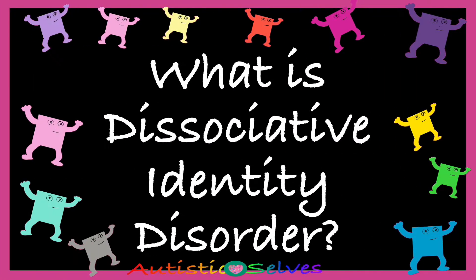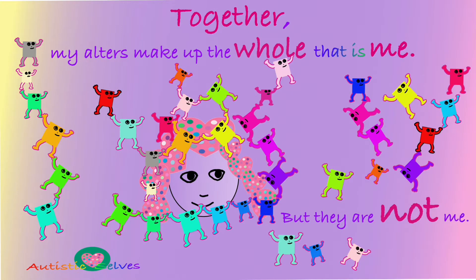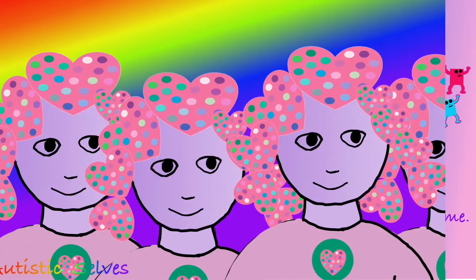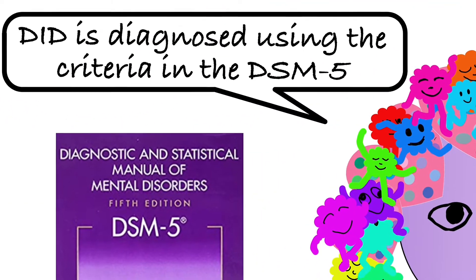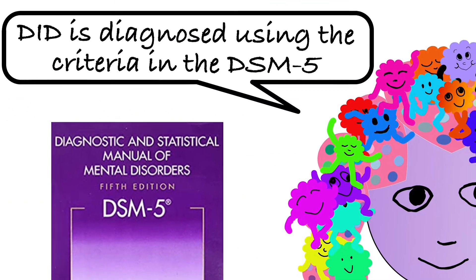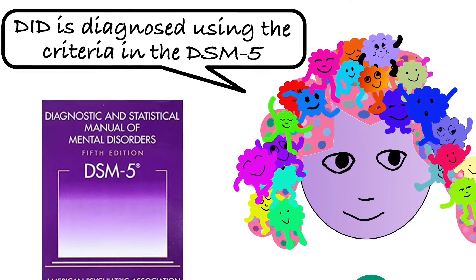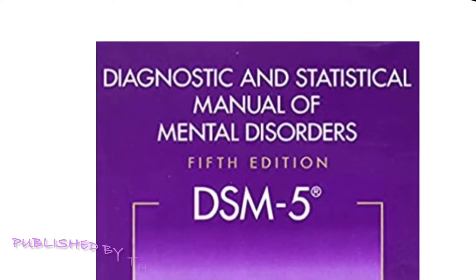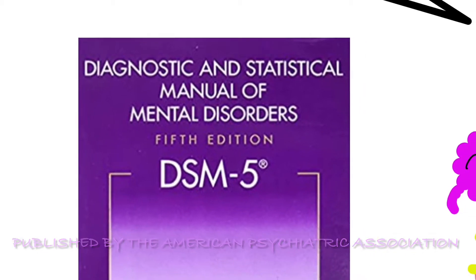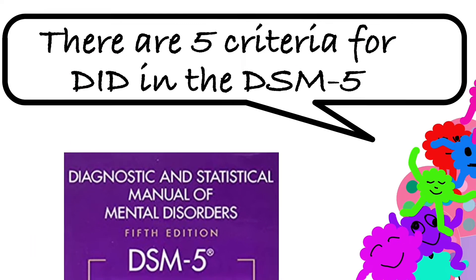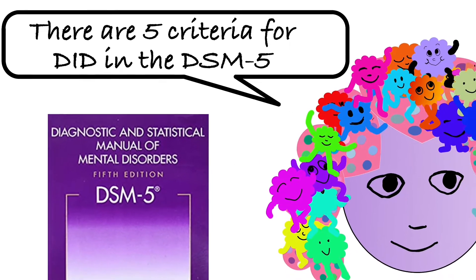What is Dissociative Identity Disorder? Dissociative Identity Disorder, or DID, used to be called Multiple Personality Disorder. DID is diagnosed using the criteria in the DSM-5, which is the official manual used for classifying and diagnosing mental disorders, published by the American Psychiatric Association. DID can be diagnosed when a person meets all five of the criteria listed in the DSM-5.